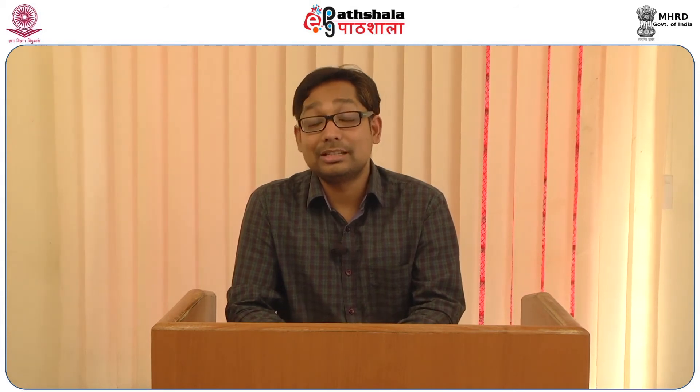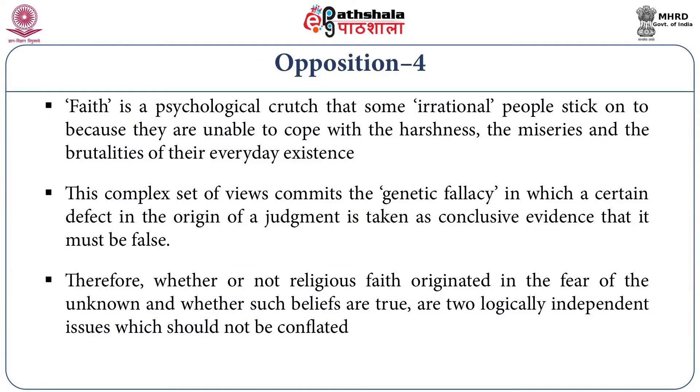The genetic fallacy is also known as the fallacy of origins or fallacy of virtue. For instance, if one were to argue 'John cannot possibly tell the truth because he is a thief,' the question of whether or not he is actually telling a lie has already been given a positive answer by examining not the statement itself but its disreputable source. But this is incorrect. A ruthless dictator can also come up with criticisms of democratic forms of government which are valid and quite reasonable. Whether religious faith originated in fear of the unknown and whether such beliefs are true are logically two independent issues.